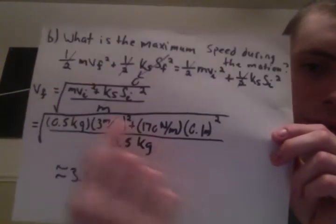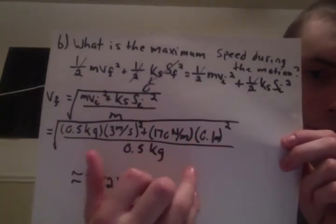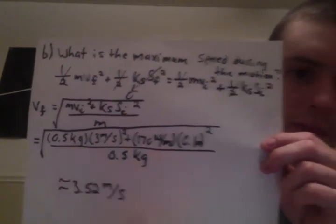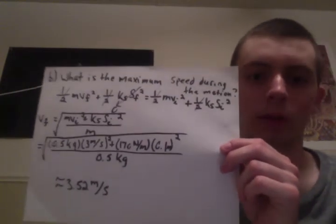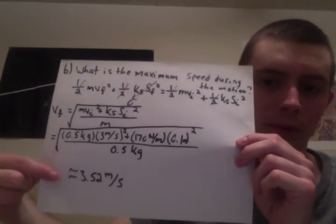Everything kind of falls into place. You can check all of the values are plugged in with the original values from the first piece of paper that I had. When I compute everything, I get this as my velocity, and that would be the maximum velocity.